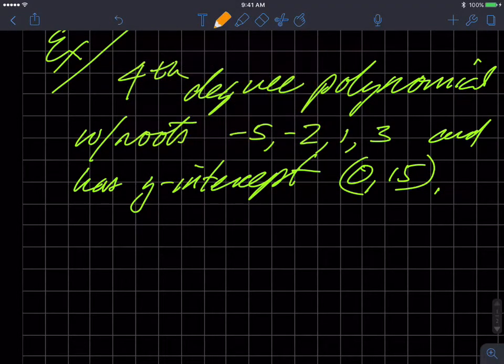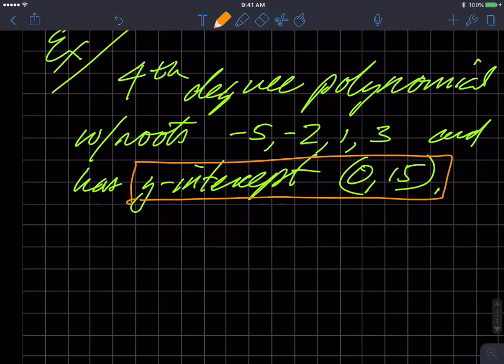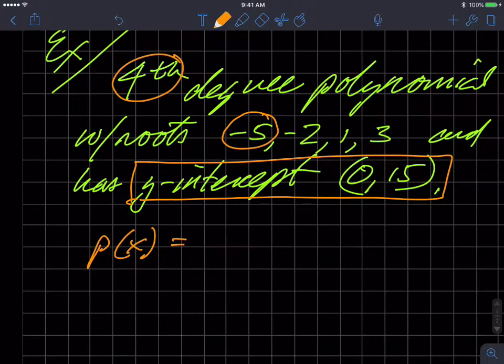Now, given that information, I'm going to ask you to ignore this part right now and let's focus on these guys. So that's a root and our polynomial is degree four. So I know p of x is equal to some x to the fourth, plus other stuff.